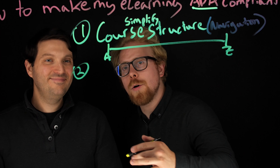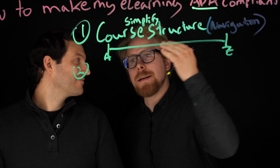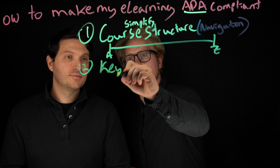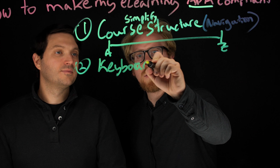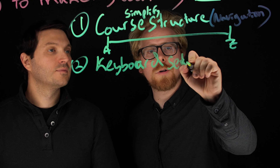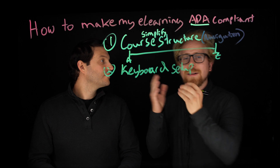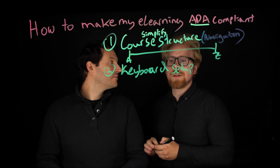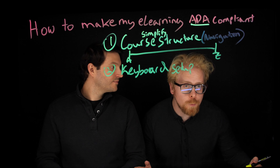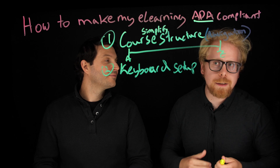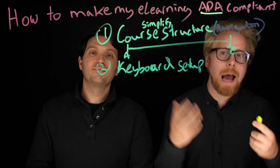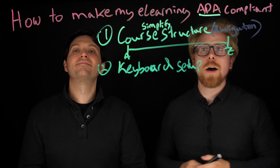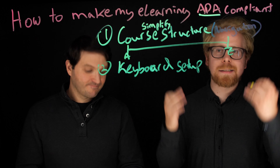The second thing is how you set up the navigation with your keyboard — keyboard setup. When you're building out your e-learning, you want to make sure that the keyboard setup related to interactions in your e-learning program is simple. You shouldn't have keys that are really far away from each other or keys that can be misconstrued as something else. Make the keyboard navigation simple.